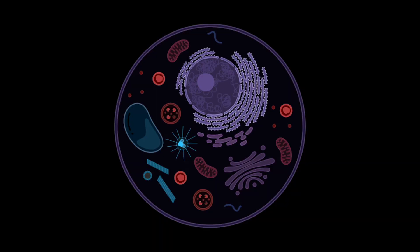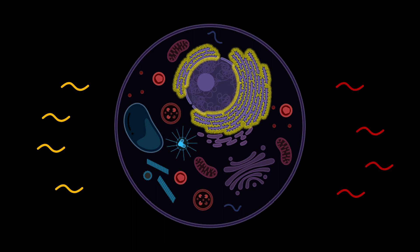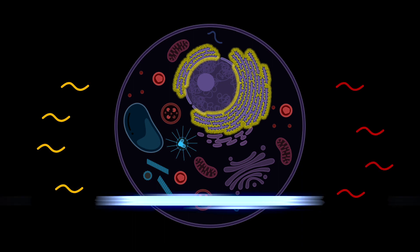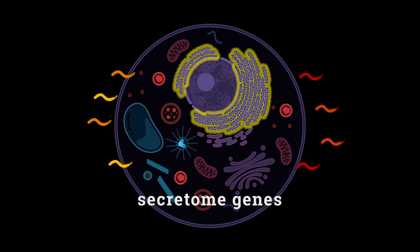As a proof of concept, we first sought to focus on a specific subcellular compartment: the endoplasmic reticulum. The translation of genes that encode secreted, glycosylated, and/or transmembrane proteins, collectively termed the secretome, has been shown to take place on the endoplasmic reticulum.